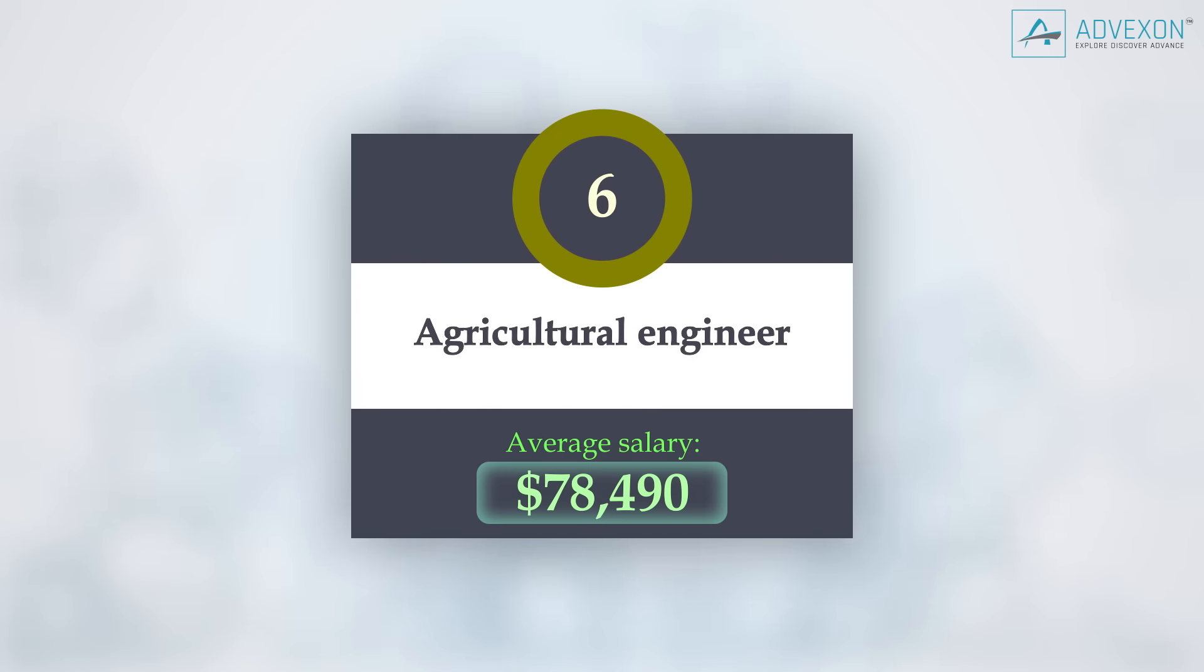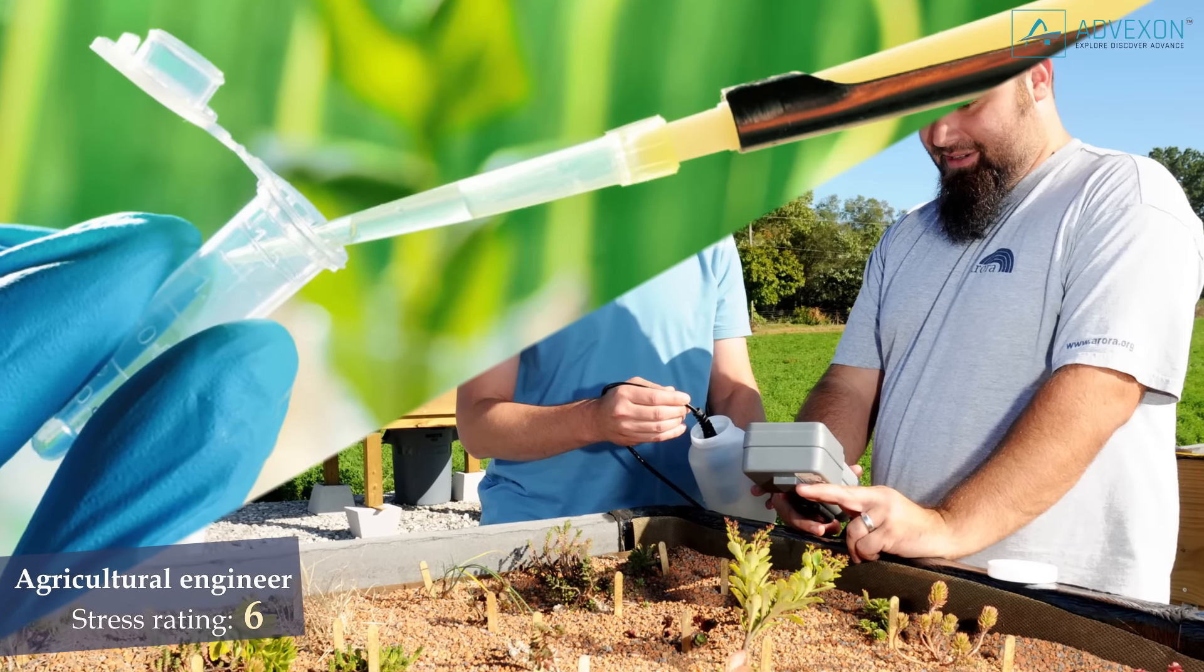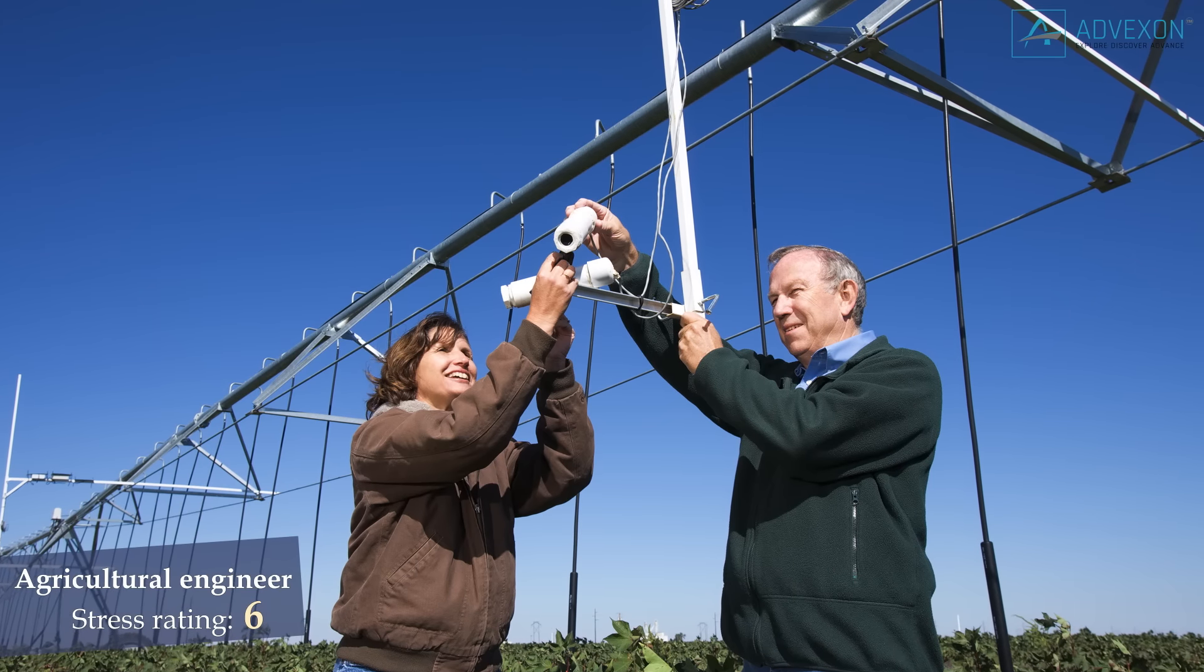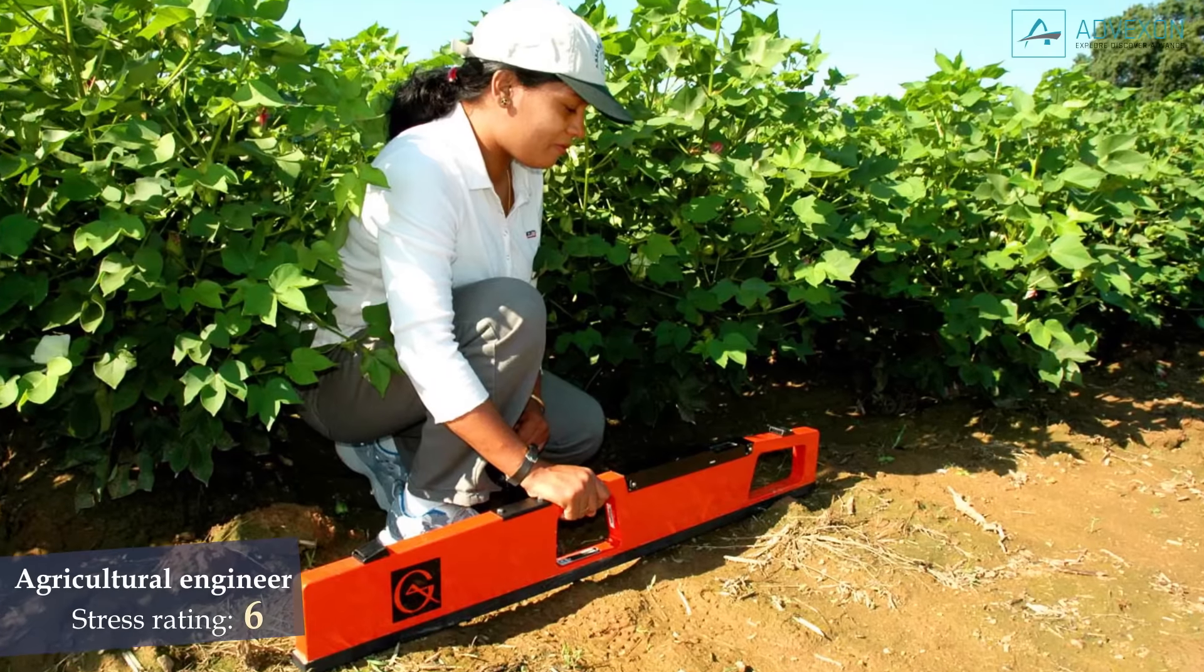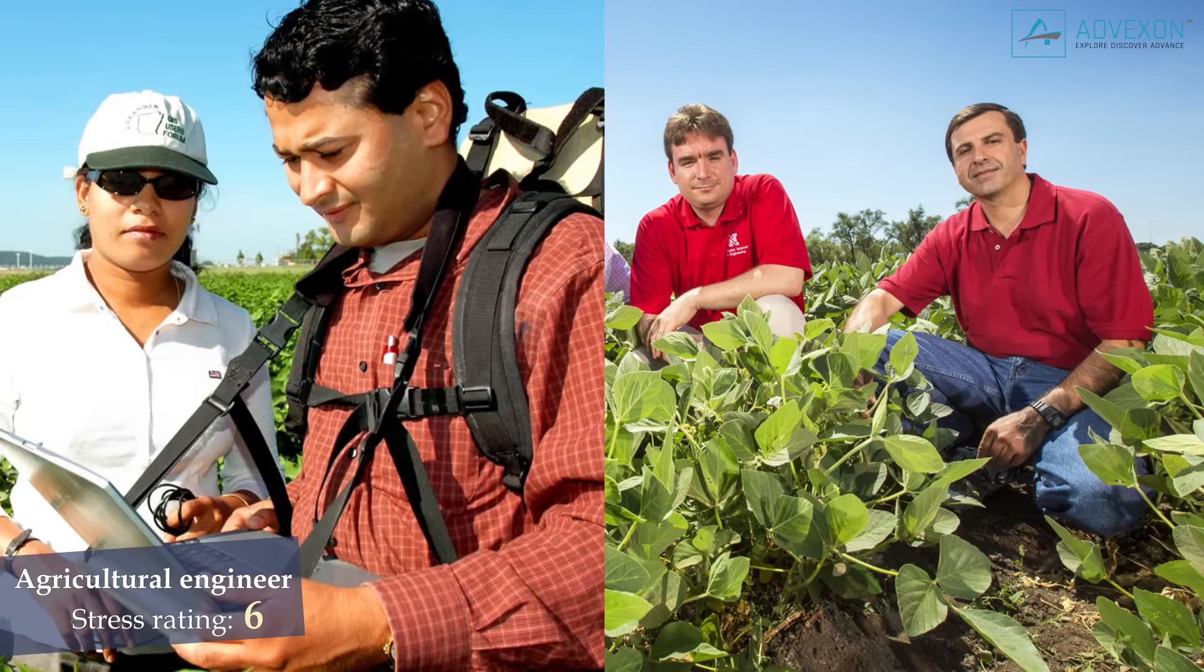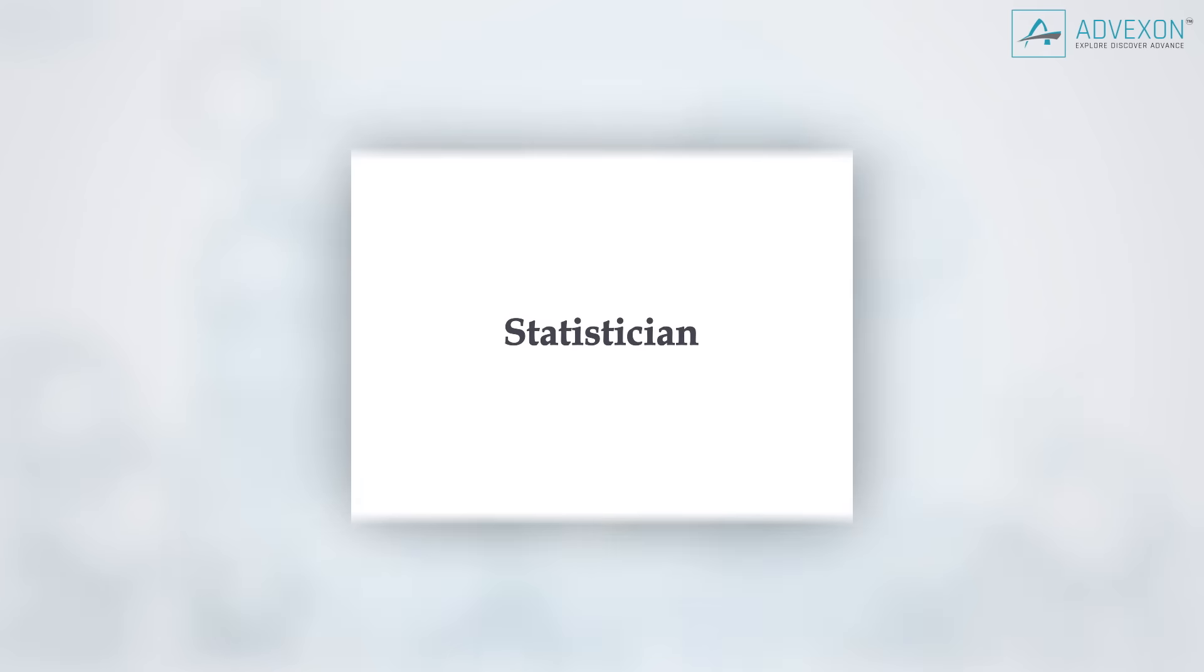Agricultural engineer. Stress rating of 6, average salary $78,000. They apply knowledge of engineering technology and biological science to agricultural problems concerned with power and machinery, electrification, structures, soil and water conservation, and processing of agricultural products. They require at least a bachelor's degree, preferably in agricultural engineering or biological engineering.